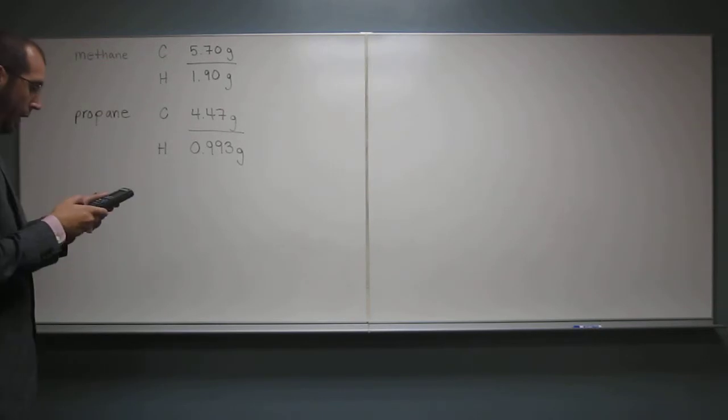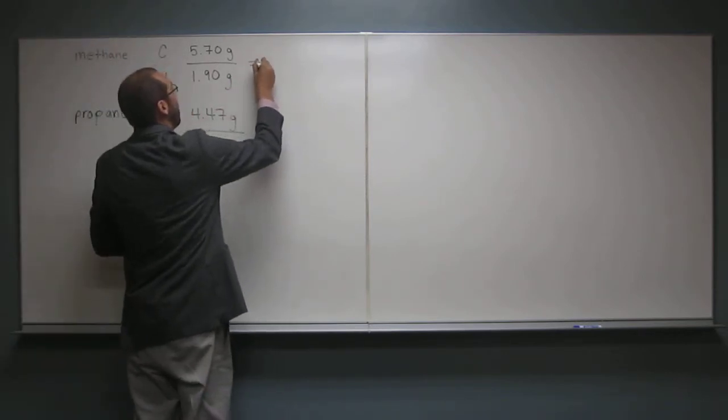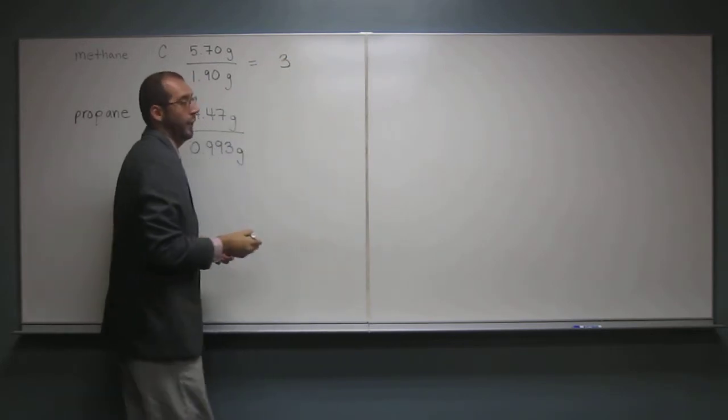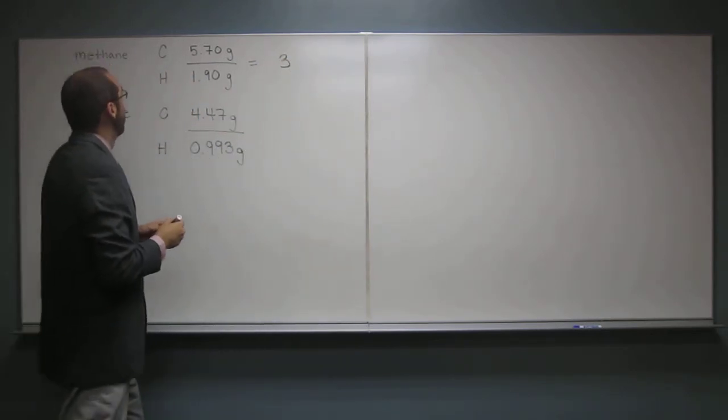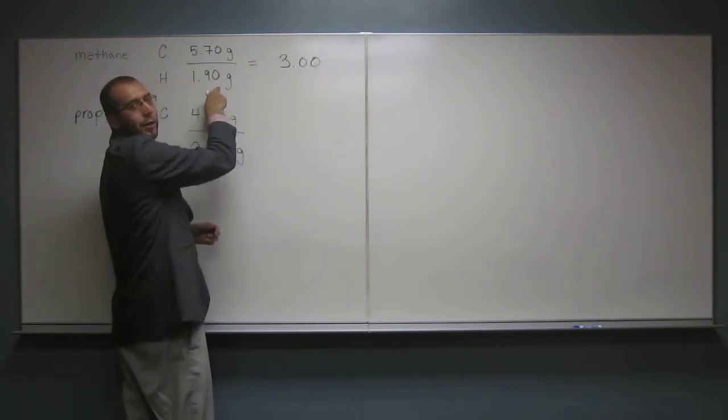So we're going to get 5.70 divided by 1.90, and I get 3.0, like that. And in fact, if you want to, we can do 3.00, since there's significant figures.